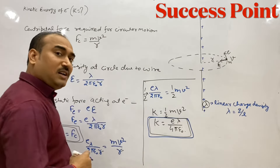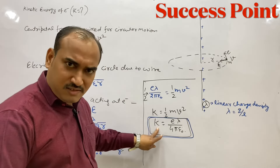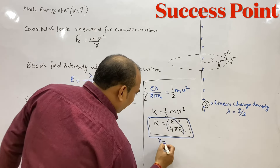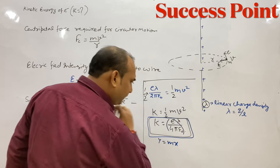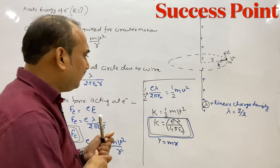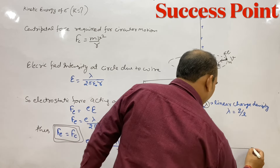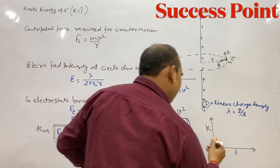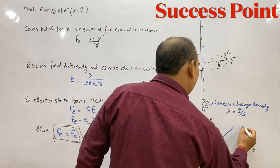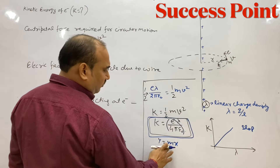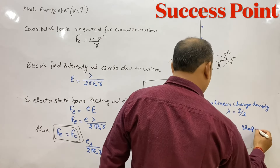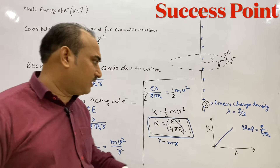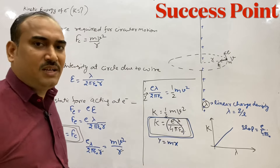अब third part: draw the graph of kinetic energy as a function of lambda। K = eλ/(4πε₀) — यहाँ e/(4πε₀) सब constant है, तो यह y = mx type का function है — K linearly depends on lambda। इसलिए K और lambda का graph एक straight line होगा। Slope = e/(4πε₀)। So the variation of K with lambda will be a straight line.